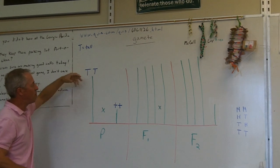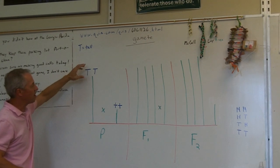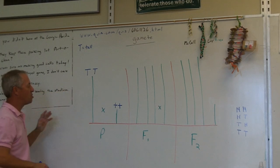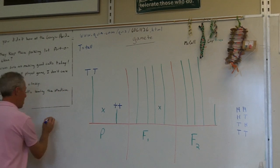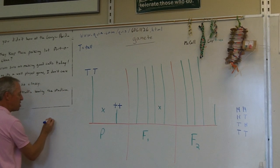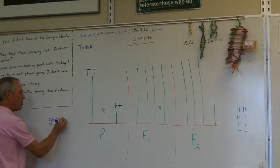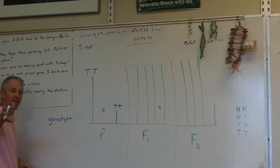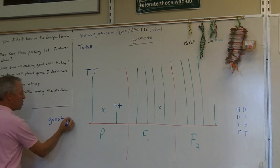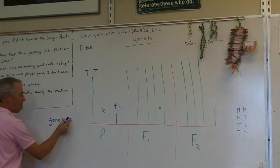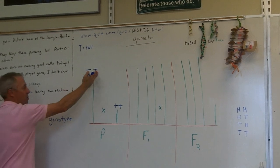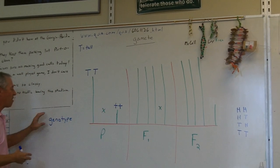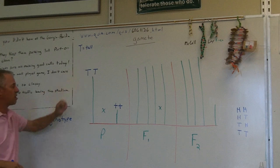When you're talking about the letters of the genes, we call those genotypes. Can you say genotype? Genotype. Genotype are the letters — either big T, big T or little t, little t. He called that the genotype. Now what the plant actually looked like, he called that the phenotype.